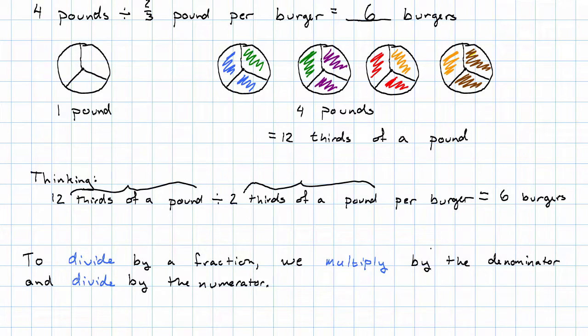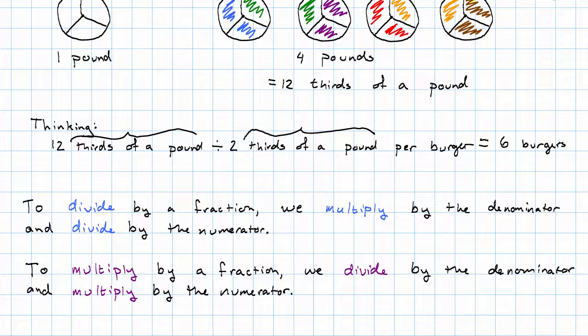Contrast that with what we saw before. To multiply by a fraction, we found that we wanted to divide by the denominator and multiply by the numerator. What's the difference?